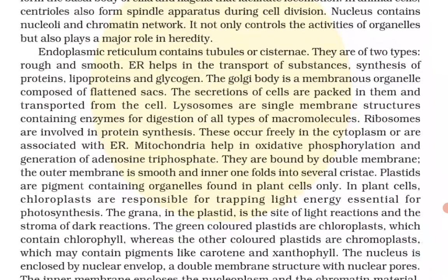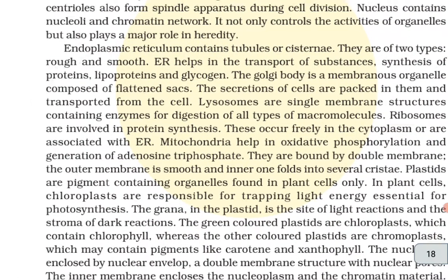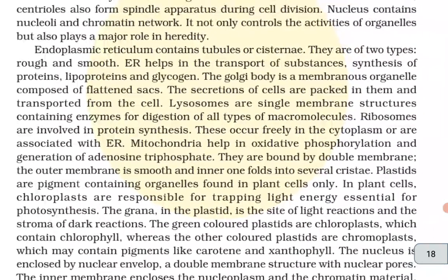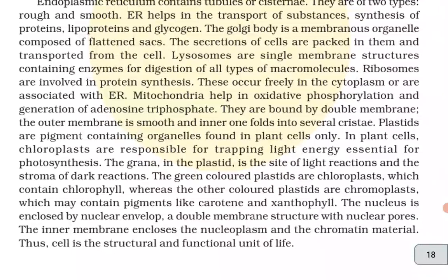The nucleus contains nucleoli and chromatin network. It not only controls the activities of the organelles but also plays a major role in heredity. Endoplasmic reticulum contains tubules or cisternae; they are of two types — rough and smooth. Endoplasmic reticulum helps in transport of substances, synthesis of proteins, lipoproteins, and glycogen. The Golgi body is a membranous organelle composed of flattened sacs; the secretions of the cells are packed in them and transported from the cell. Lysosomes are single-membrane structures containing enzymes for digestion of all types of macromolecules.